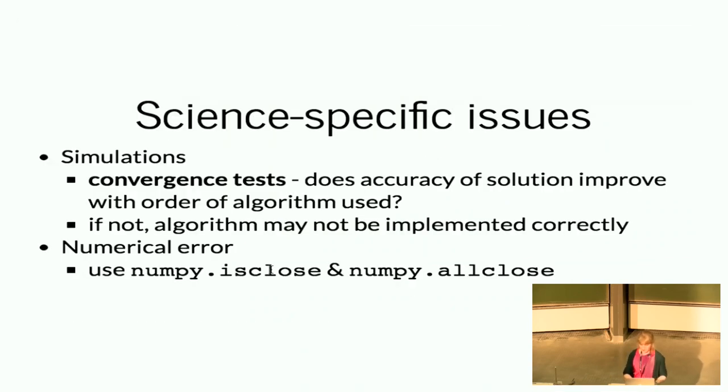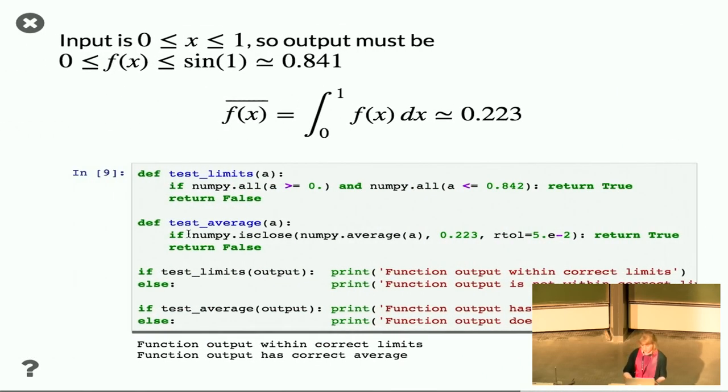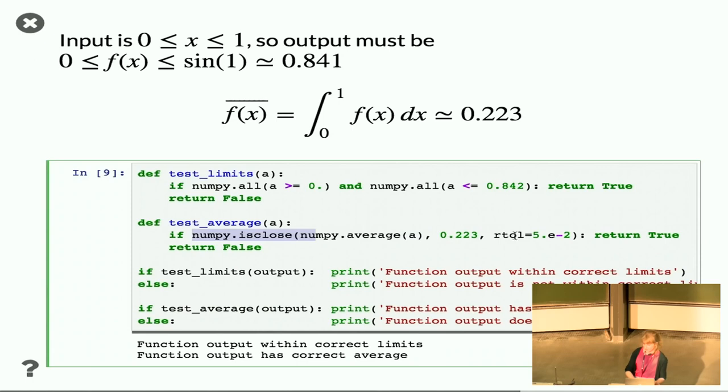And the last point here is that the numerical error, because we're always going to have floating point errors, you can't necessarily check equality. It's better to check that it's close. So if you look at here, so here I didn't check equality. I didn't check that my average was exactly equal. I checked that it was close within a certain tolerance. So this is really useful for testing scientific codes.